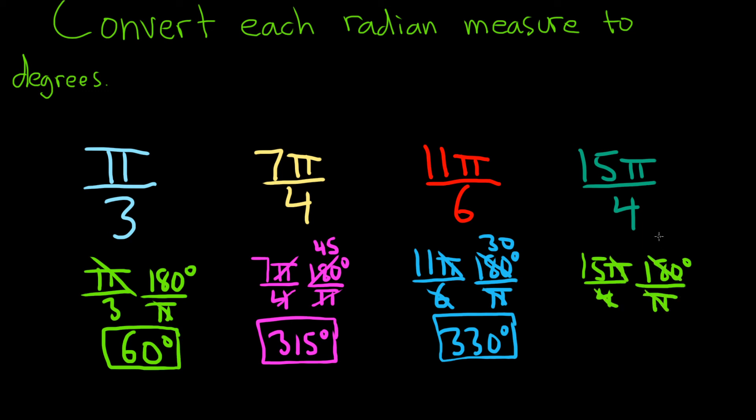4 goes into 180 45 times. Big number here, 15 times 45—definitely going to use a calculator. 675 degrees. The answer there would be 675 degrees.